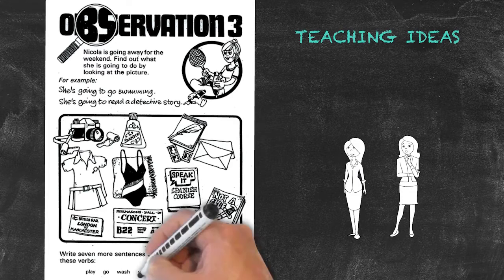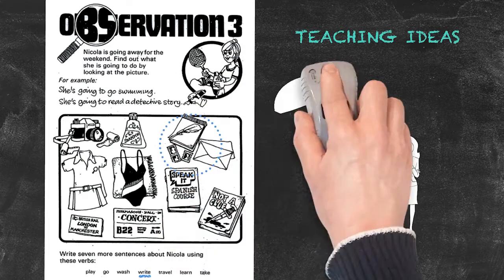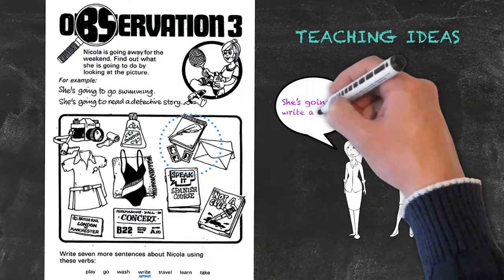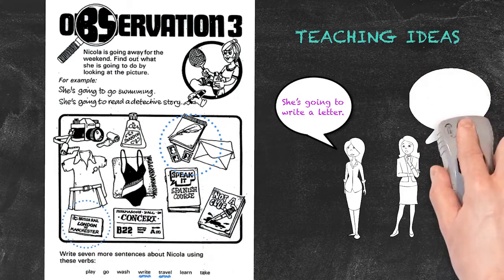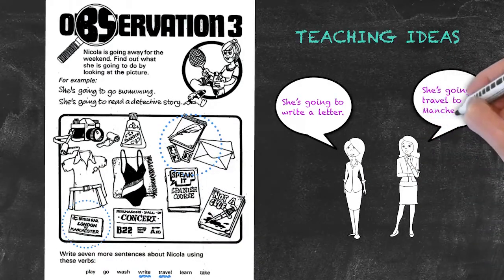So they might read the word write, look at the picture, and say she's going to write a letter. They can look at the word travel, try to match it with a picture, and say she's going to travel to Manchester.